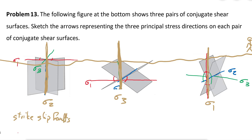If the orientation of Sigma 2 is perpendicular to the earth's surface and there is any displacement along these fractures, it's going to produce a strike-slip fault. If Sigma 3 is perpendicular to the earth's surface, we are going to have reverse faults. And if Sigma 1 is perpendicular to the earth's surface, we are going to have normal faults.